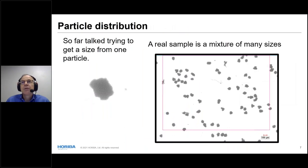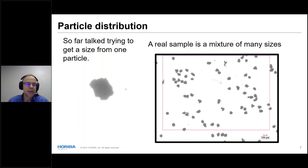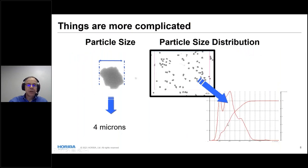Now I've shown you one particle and six different ways of saying how big it is. The vast majority of practical samples are a mixture of many, many particle sizes together. We aren't trying to talk about just one particle size — we're trying to talk about a distribution of sizes. Take something chemically pure like table salt: it's all sodium chloride, but it ranges from small to large in the same container. So we've gone from finding one number to having a whole bunch of numbers and deciding how to summarize them.